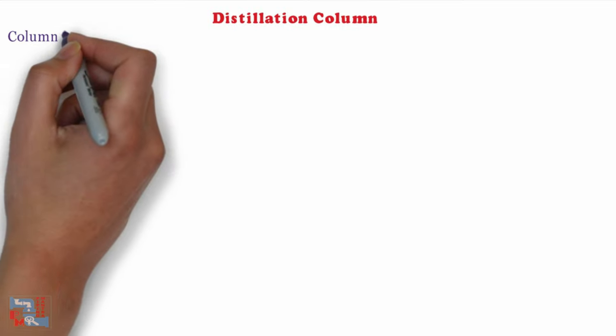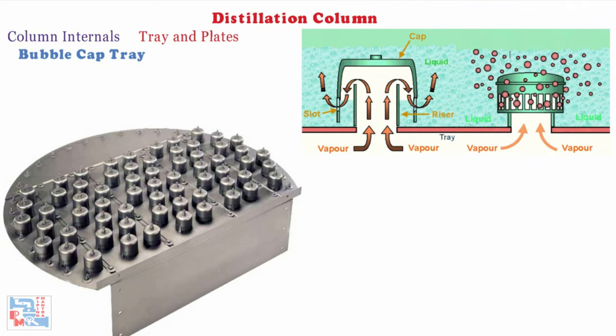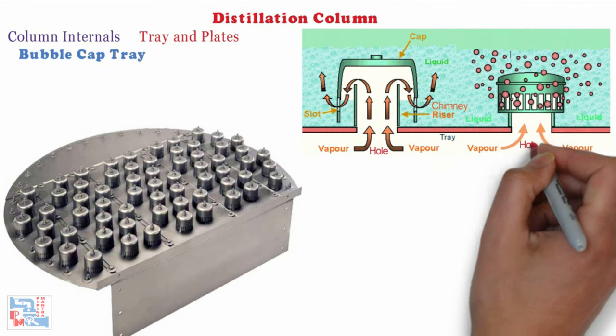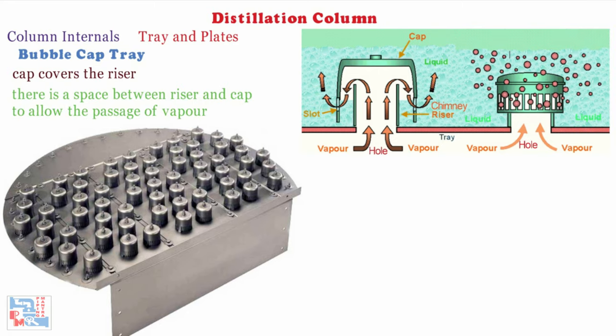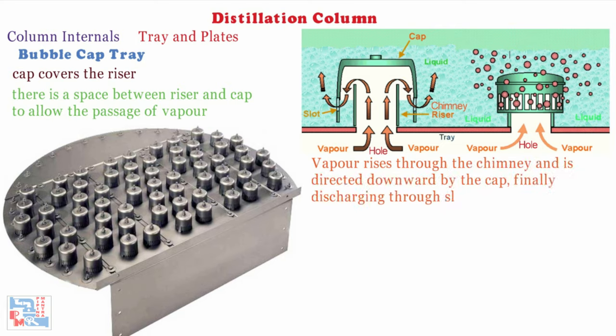Now let's move on to the distillation column internals portion of the video. First comes trays and plates. Under this category the first type of tray is bubble cap tray. A bubble cap tray has riser or chimney fitted over each hole and a cap that covers the riser. The cap is mounted so that there is a space between riser and cap to allow the passage of vapor.